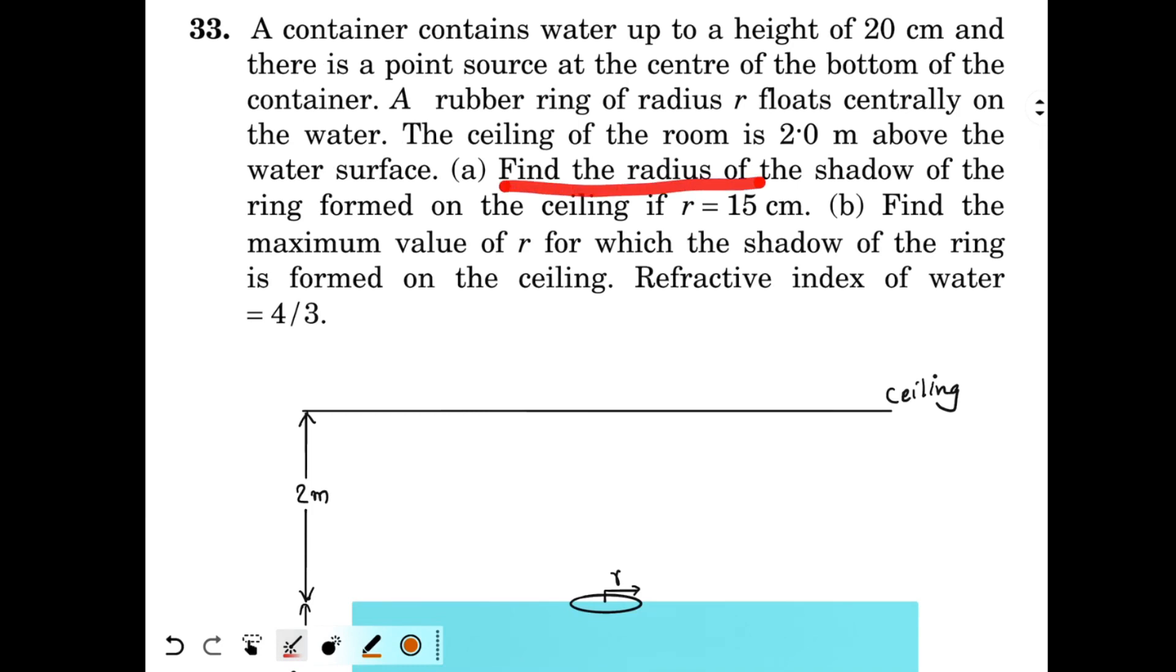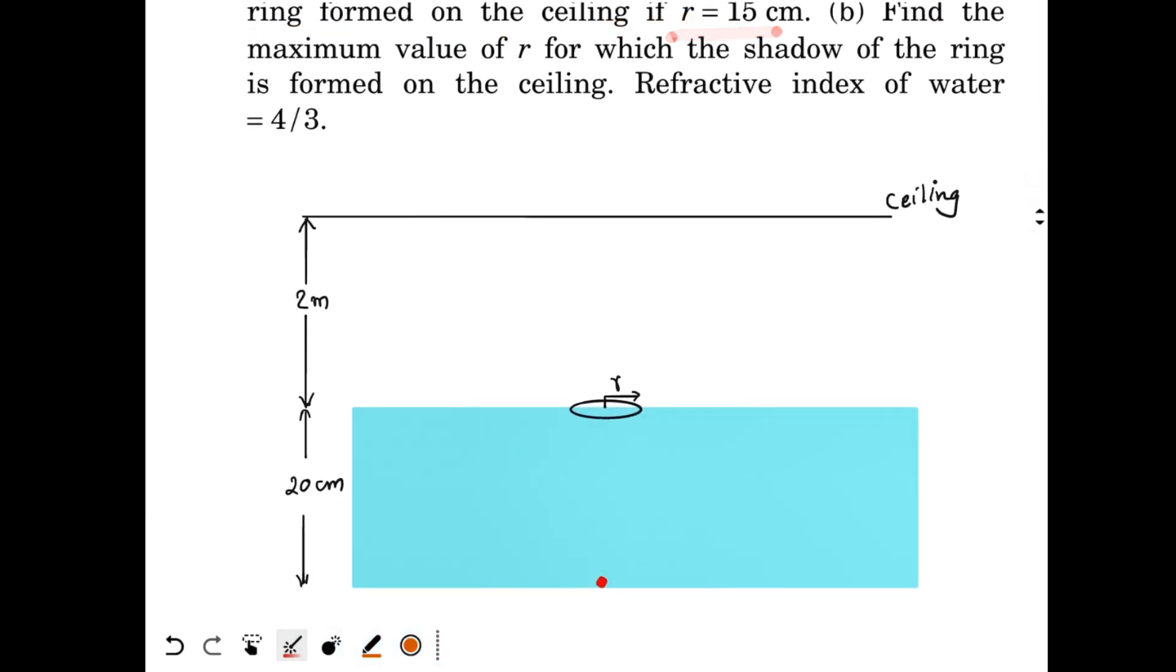So find the radius of the shadow of the ring formed on the ceiling if r equals 15 cm. So let's solve part 1. Light rays will come out. One ray is coming out exactly vertically upwards. Let's draw this at the center. Then another ray will come out, reach the edge of the ring. And after coming into the air the ray will get refracted. So it will reach over here. If this is your ring then the shadow of the ring will be formed over here.